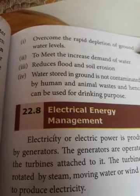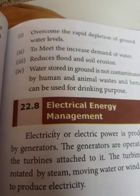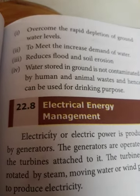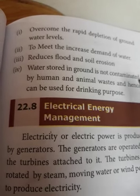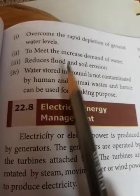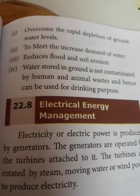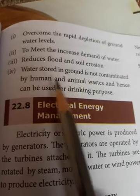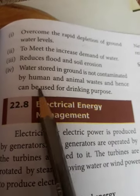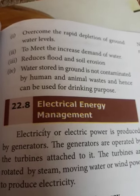The advantages of rainwater harvesting: First, it helps to overcome the rapid depletion of groundwater levels — by recharging the groundwater, the groundwater level can be maintained. Second, it helps to meet the increased demand for water. Third, it reduces flood and soil erosion, as holding excess water reduces flooding. Fourth, water stored in the ground is not contaminated by human and animal wastes, so it can be utilized for drinking purposes.